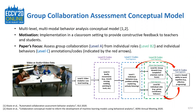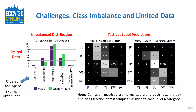Our paper focuses on the development of supervised machine learning models to infer the overall group collaboration quality from individual-level roles and individual-level behavior annotations. When building these machine learning models, we came across both class imbalance and limited training data challenges. These challenges are clearly highlighted through the label distributions shown on the left side. For our experiments, we explored both video and audio-plus-video modality settings. Training machine learning models directly on this data resulted in biased test-set predictions, more inclined towards the categories with the greatest number of samples.